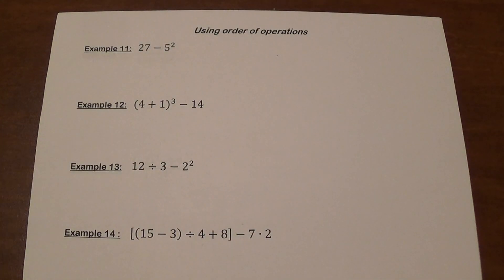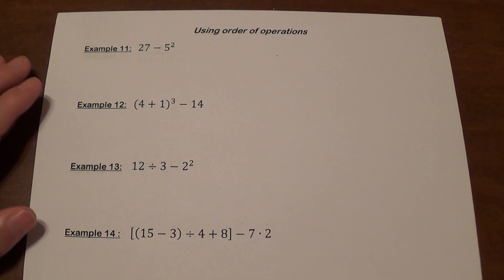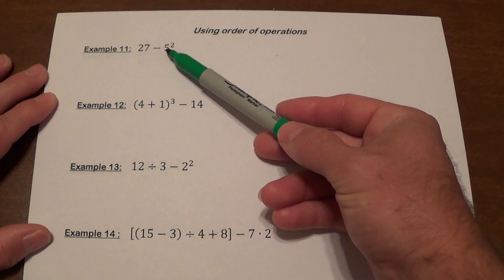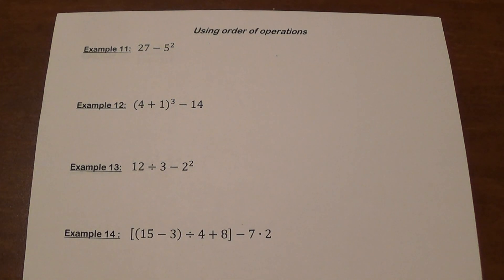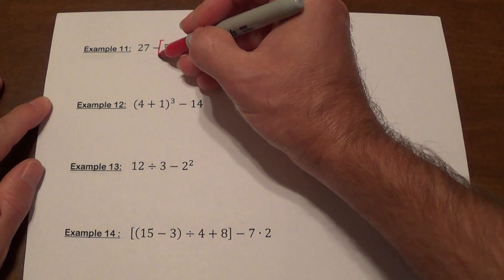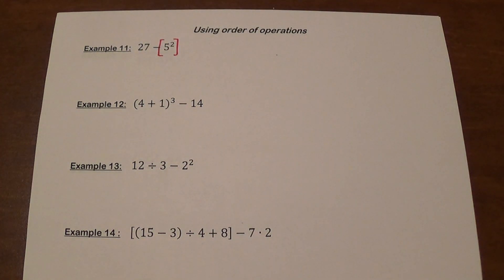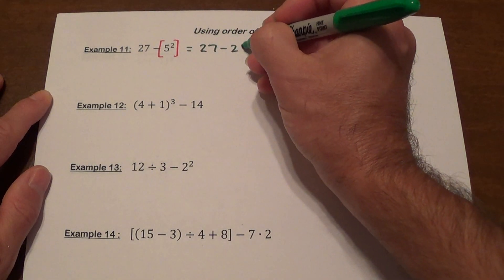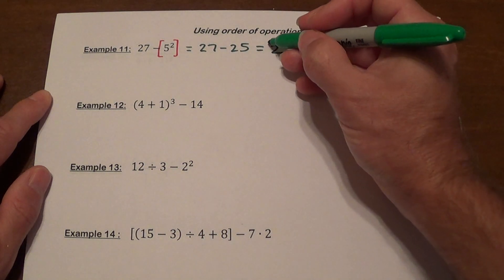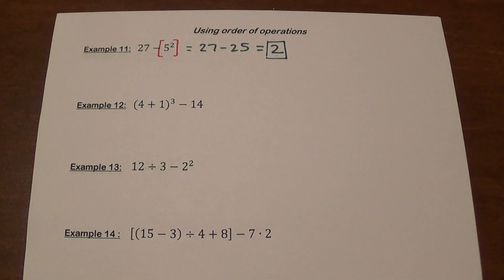Now we introduce exponents. Exponents come after parentheses in the order of operations. Example 11: 27 minus 5 squared. If you see a single sign between numbers, that's a minus. 5 squared is 25, so 27 minus 25 gives us 2.